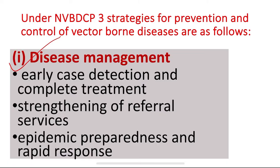The referral could be to a CHC or, in urban areas, to hospitals and institutions. We have to strengthen these referral services. Next is epidemic preparedness and rapid response — if an epidemic breaks out due to climatic changes or natural calamities, we identify epidemic areas, monitor risk factors, understand alarm signals, and give a rapid response to that outbreak.